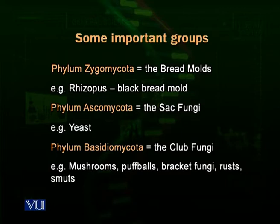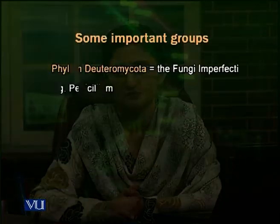Other fungi in the Basidiomycota phylum include puffballs, bracket fungi, rust, and smuts. Rust fungi grow on different materials in humid, moist environments, causing a brownish or dark-colored mass to appear on surfaces, making them look rusty.